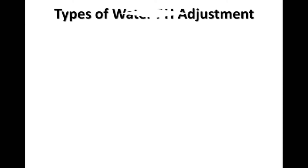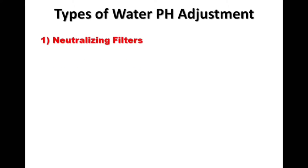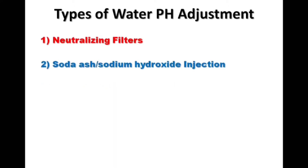In this video I will guide you about the three types of pH adjustment. The first one is neutralizing filters. The second one is soda ash and sodium hydroxide injection. The third one is acid injection.